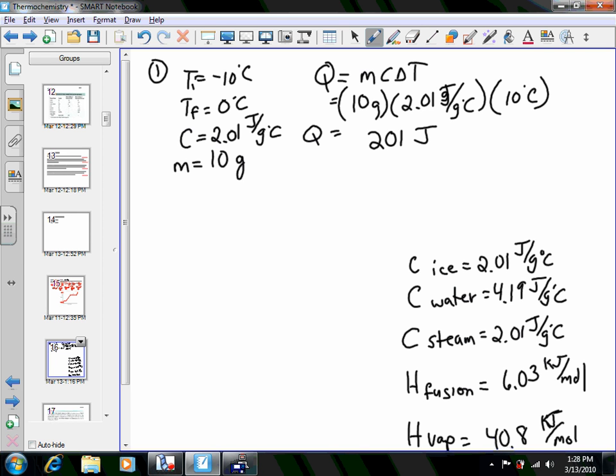201 joules is the amount of heat that would be used up at that point. So 201 joules is the energy just to heat the ice from negative ten to zero.